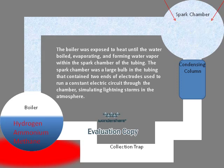Once in the spark chamber, we proceeded to run high electricity through two electrodes located in the spark chamber. These two electrodes were used to simulate lightning storms during the early Earth's atmosphere.